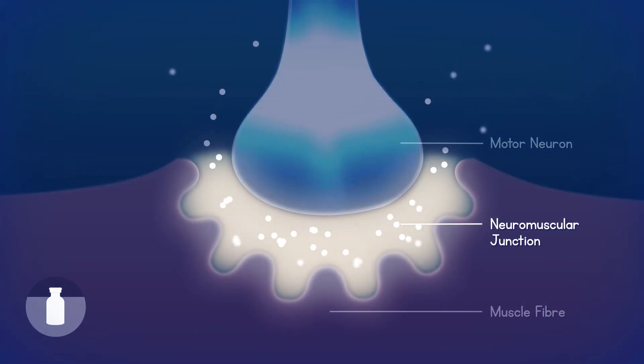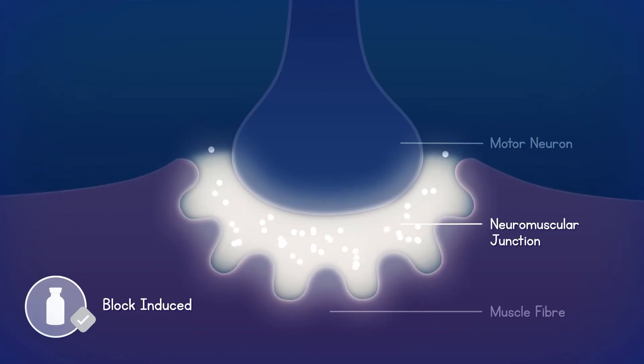In the neuromuscular junction which then results in temporary muscle paralysis, also known as a neuromuscular block.